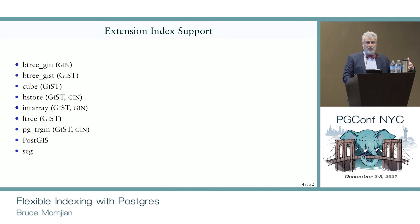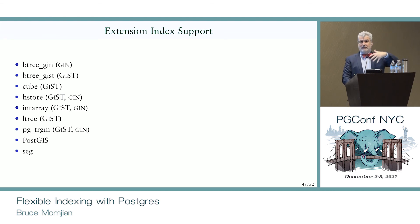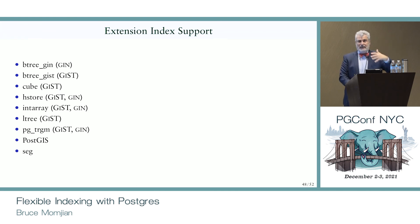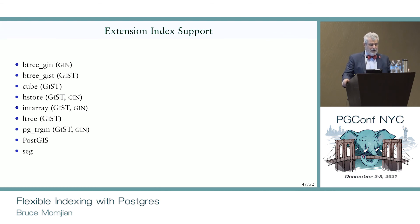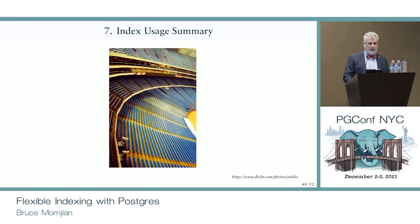A lot of extensions have support for these index types. For example, we have a Btree implementation for GIN. Before Postgres 13, if you had lots of duplicates in Btree, I'd say try Btree-GIN, because it's Btree but removes duplicates — now we have deduplication in Btree itself. We also have Cube, Intarray, trigrams, and PostGIS — all with indexing support.